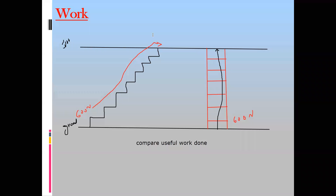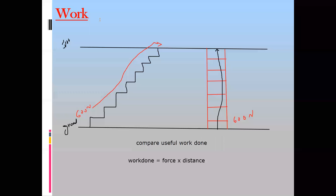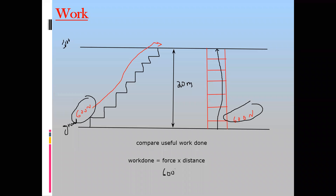What is the useful work done? Work done equals force multiplied by distance. They are applying a force of 600 Newton because they have identical weight. If the distance between the floors from ground to first floor is 20 meters, then work done equals 600 multiplied by 20, which gives 12,000 joules. So the useful work done by person A is 12,000 joules. The useful work done by person B is also 12,000 joules. If you have identical objects reaching the same position, they will have the same useful work done.